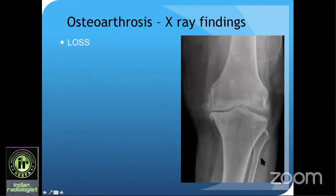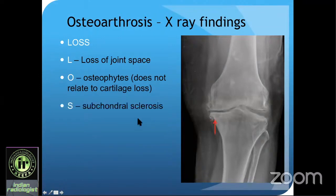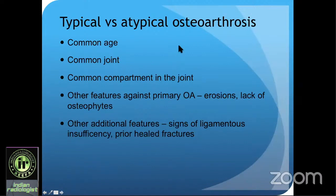The X-ray findings of osteoarthrosis can be remembered by the mnemonic LOSS: L for reduced joint space, O for osteophytes, S for subchondral sclerosis, and S for subchondral cyst. Importantly, osteophytes do not mean that a particular compartment has cartilage loss — the two don't go hand in hand. However, loss of joint space and subchondral cysts are indicators of cartilage loss, as they usually develop after cartilage wear has occurred.